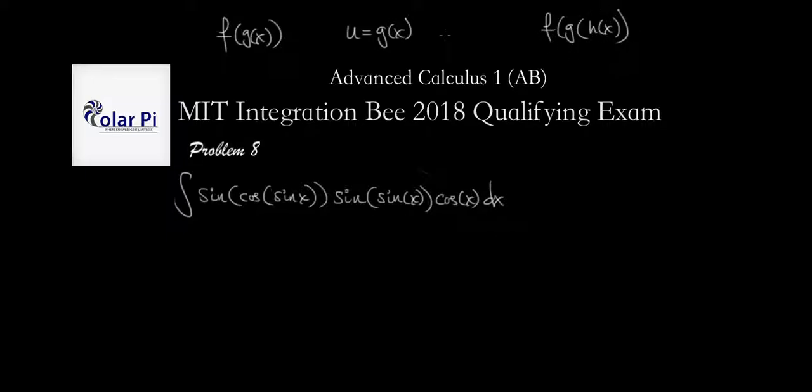But this suggests that we should let u equal g of h of x, right? Okay, and that here would say that we should let u be this part, cosine of sine of x, right? Okay, so let's do that and see if it bears fruit.